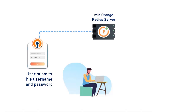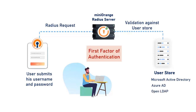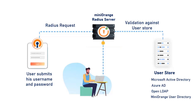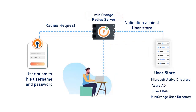The user submits their username and password, which is accepted by the Mini Orange Radius server as a Radius request. The user can be validated against any user directory like Microsoft Active Directory, Azure AD, OpenLDAP, or you can keep users in the Mini Orange user directory as well. After the first level of authentication, Mini Orange prompts the user with two-factor authentication and grants or revokes access based on the 2FA input by the user.